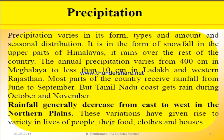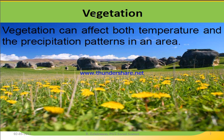Rainfall generally decreases from east to west in the northern plains. These variations have given rise to variety in the lives of people — their food, clothing, and houses differ accordingly. Good rainfall leads to good agriculture and dense population, while poor rainfall leads to difficult conditions. Vegetation can also affect both temperature and precipitation patterns in an area.